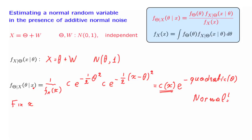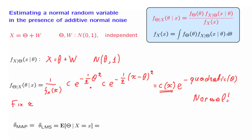Since the posterior is normal, the expected value of this conditional PDF is the same as the peak of that PDF. This would be our point estimate of theta — in particular, if we use either the MAP (maximum a posteriori probability) estimator or the least mean squares estimator, defined as the conditional expectation of theta given the observation. Both coincide with the mean of this posterior distribution. So let us find where the peak is.